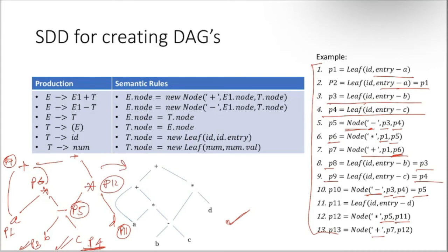Looking at the resulting diagram, this is called a DAG. The properties of a DAG: it does not have redundant entries for any node — there are no identical nodes in the graph. We don't call it a tree because it introduces loops; you can see there is a loop in the path, so it is no longer a tree and becomes a graph. There are no redundant or multiple instances created for any sub-expression.